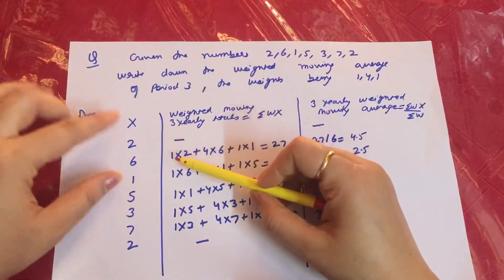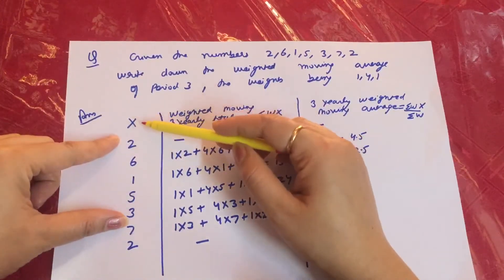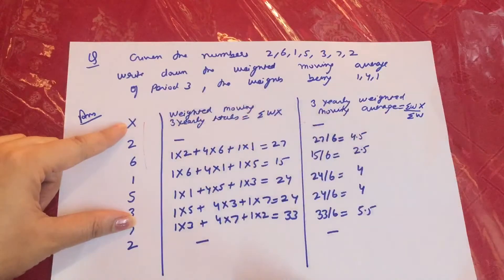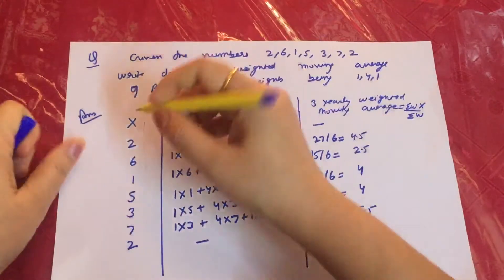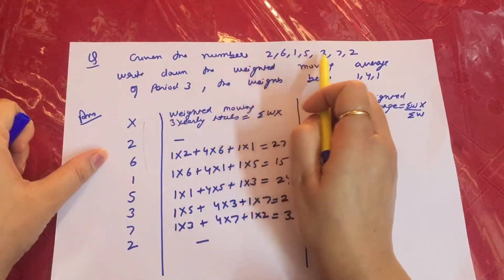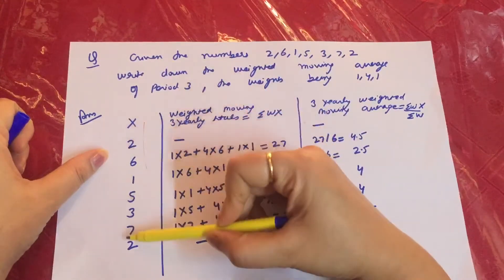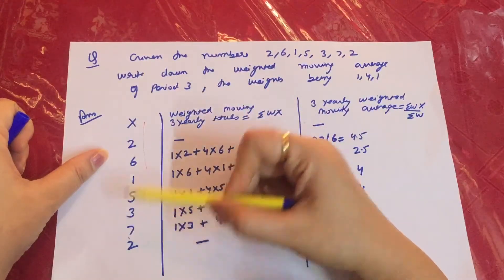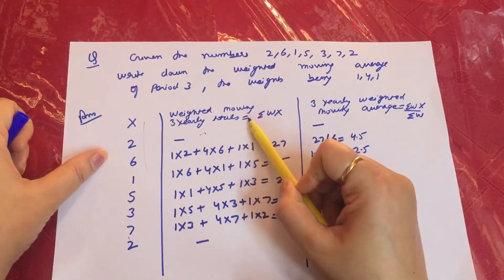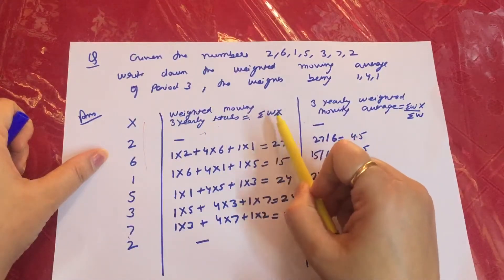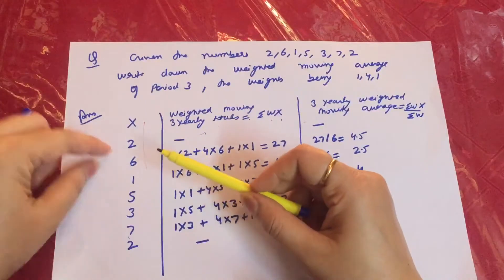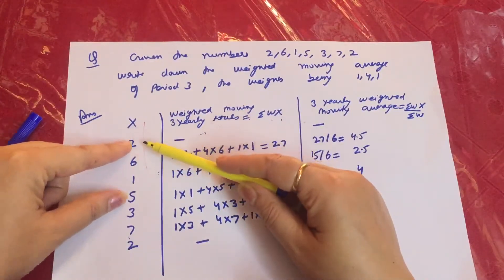Here we do the same. First, we list the given x-series values 2, 6, 1, 5, 3, 7, 2. Then the second column is the weighted moving 3-yearly totals, which is summation W into X. We do 3-3 grouping and multiply each value by its corresponding weight.